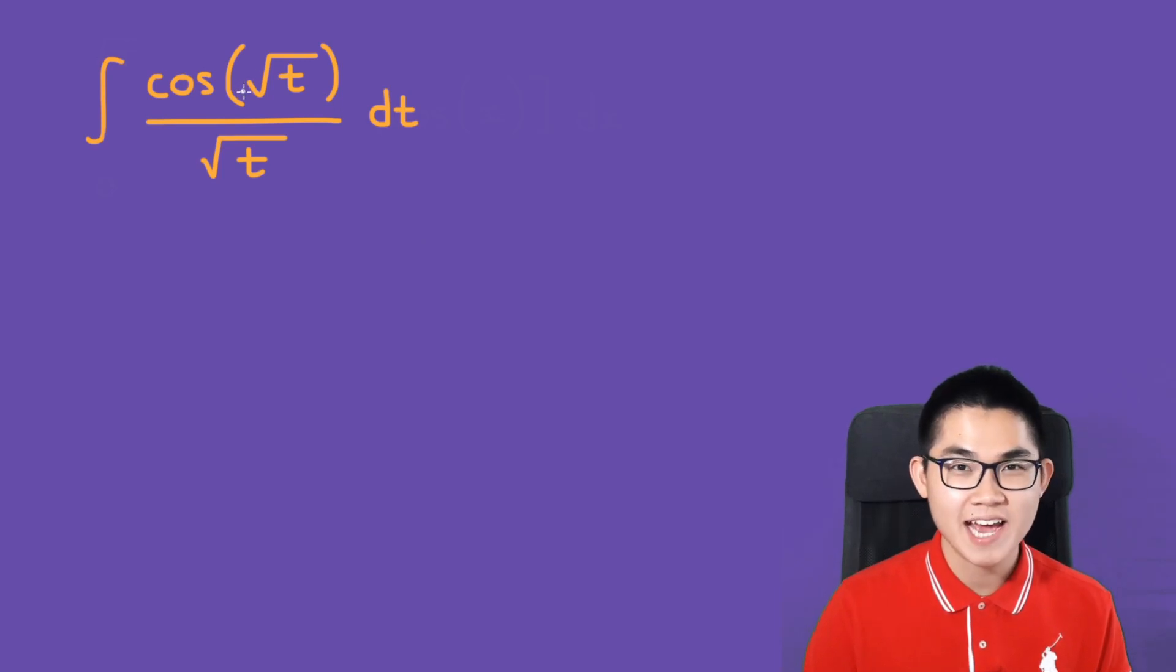The integral of cos(√t) over √t dt. The beautiful thing about u-substitution is it allows us to simplify things. So we can simplify the square root of t into u.